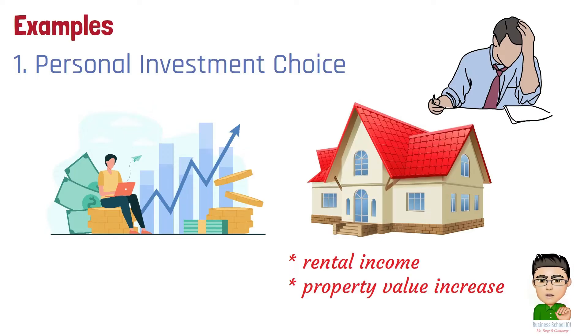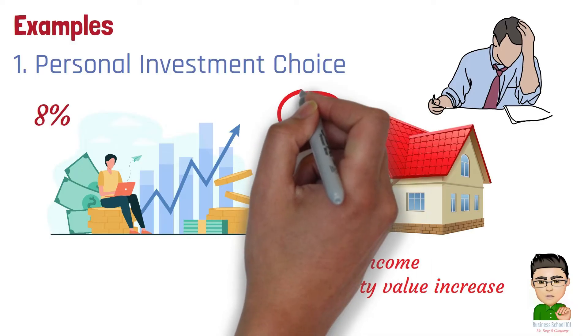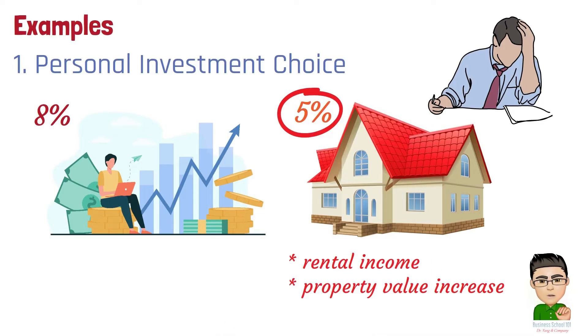For example, if the property could give you a 5% return each year and stocks are expected to give you an 8% return, then by choosing stocks, you're giving up a 5% return from the property.